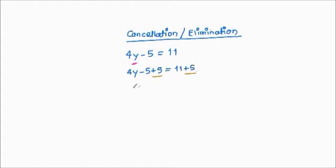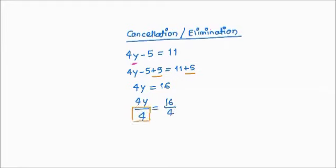Now there is nothing else other than the 4 multiplying y, so we divide both sides by 4. 4y ÷ 4 gives y, and 16 ÷ 4 gives 4. So my answer is y = 4.